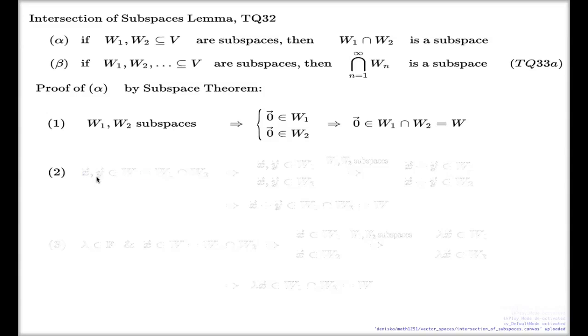Second criterion, it's the closedness under addition. So I start with two vectors from my w, which we know is the intersection of w1 and w2. From here, I conclude that x and y, they belong both to w1 and w2. This is just the interpretation of the intersection of sets. Nothing else at this stage.